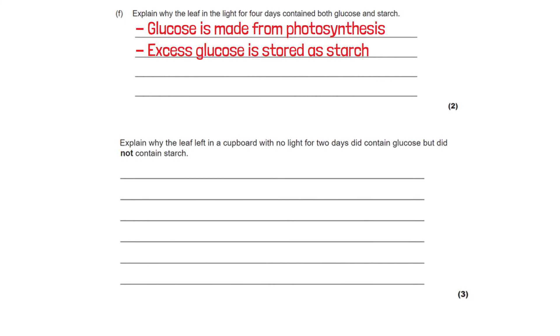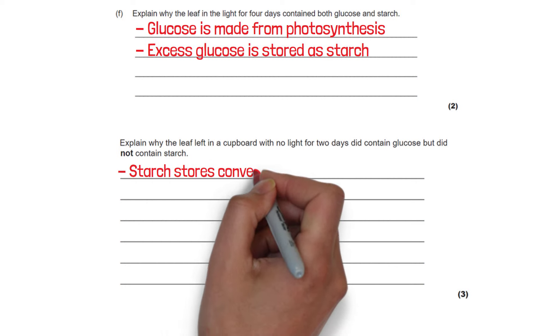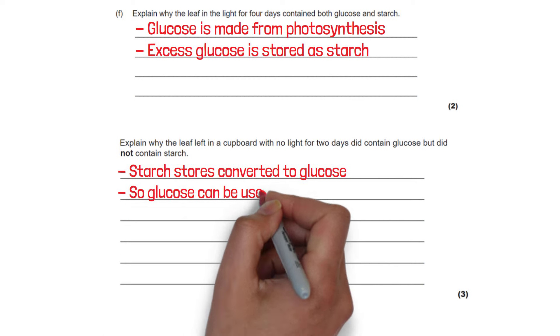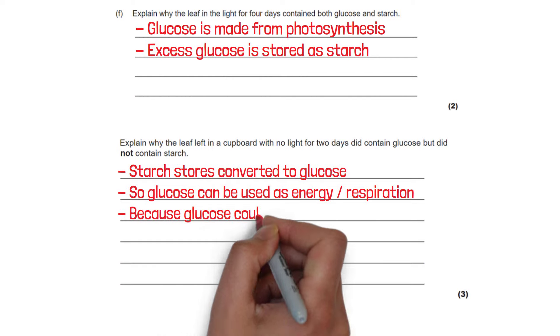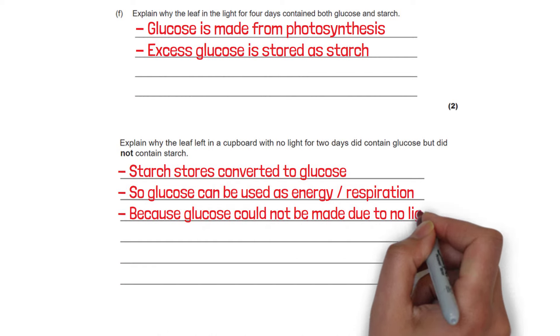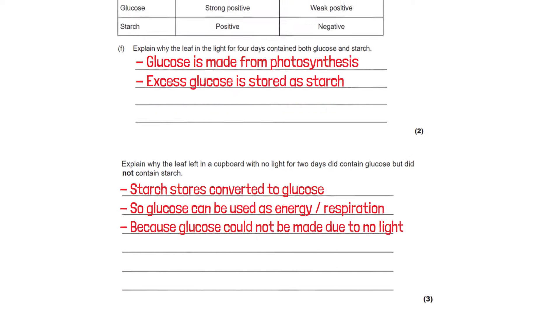The last question of the video asks us to explain why the leaf left in a cupboard did not contain any starch. In reality in those first 2 days glucose was probably converted into starch but because the students then took it away from the light and hid it for 2 days the starch stores was then converted back to glucose because the plant needed glucose to be used as energy. The plant had to resort to using the starch stores because new glucose could not be made due to the lack of sunlight exposure.